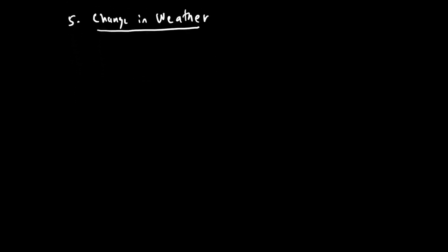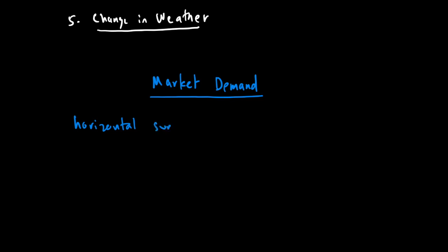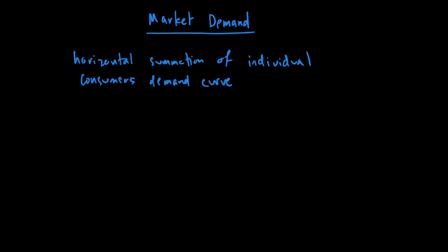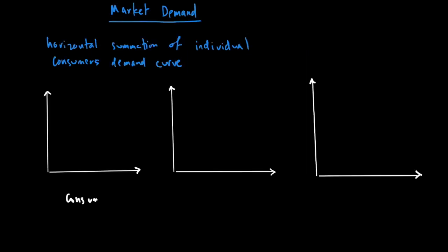The next discussion regarding demand is market demand. From individual consumers' demand, we can figure out market demand. Market demand is simply the horizontal summation of individual consumers' demand curves. When you add up individual demand curves horizontally, you get the market demand curve. Let's make a demand diagram with two consumers, consumer A and consumer B, and the whole market.